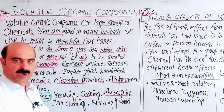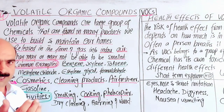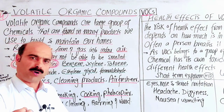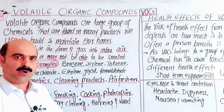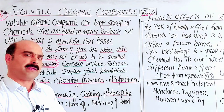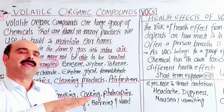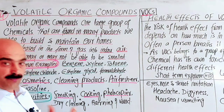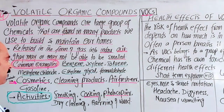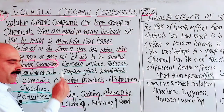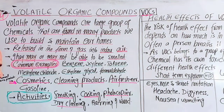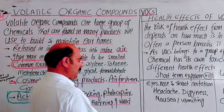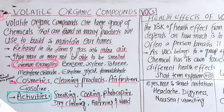Photocopier or photostat machines use liquid ink and release VOCs in the process. Other sources include dry cleaning, use of washing powder, and burning wood — all of which release volatile organic compounds as compounds into the air.